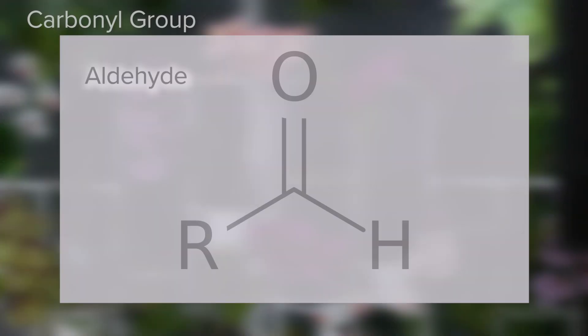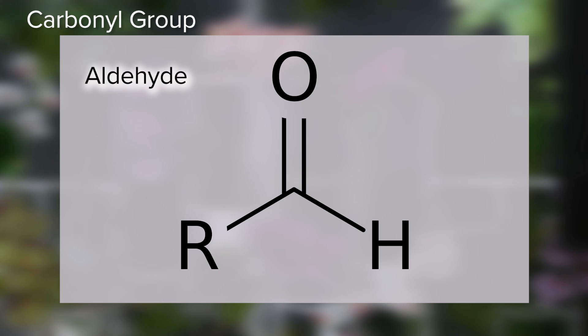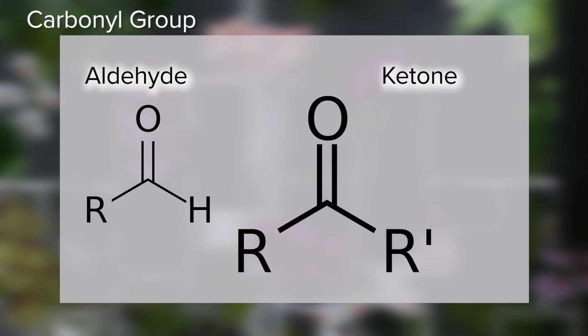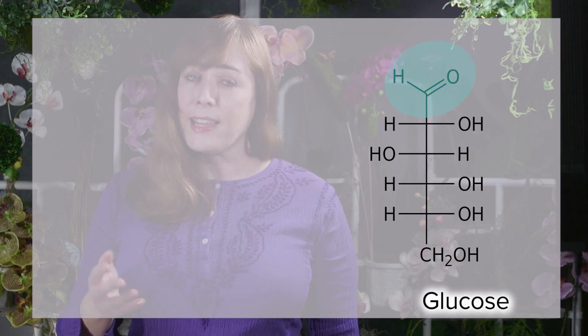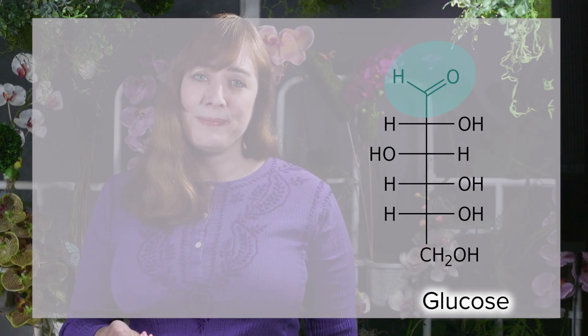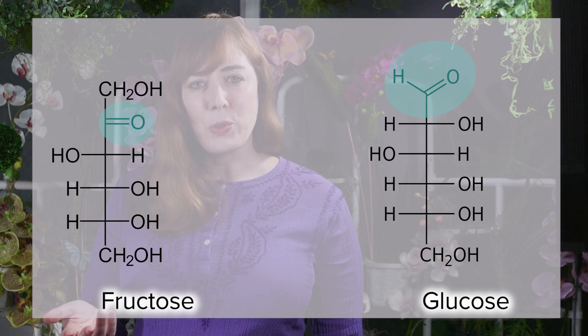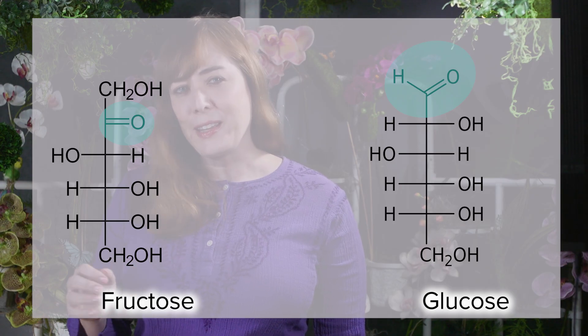The carbonyl group, CO, is a carbon double bonded to an oxygen. This is a polar group that will increase solubility in water. If this group is at the end of a carbon skeleton, it's called an aldehyde; otherwise, it's called a ketone. These are groups that you're going to see in sugars. For example, here's a carbonyl group that we'd call an aldehyde at the end of this glucose molecule. And here's a ketone group on fructose — you can see how it's not on the end.